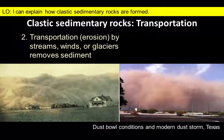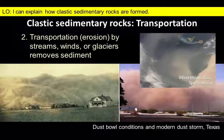Much of western Oklahoma and northern Texas lost their topsoil to winds during the Dust Bowl era of the 1930s, and we see similar dust storms today in drought-stricken western states. Elsewhere, dust and sediment from the Sahara Desert may be transported across the Atlantic Ocean to Central and North America.